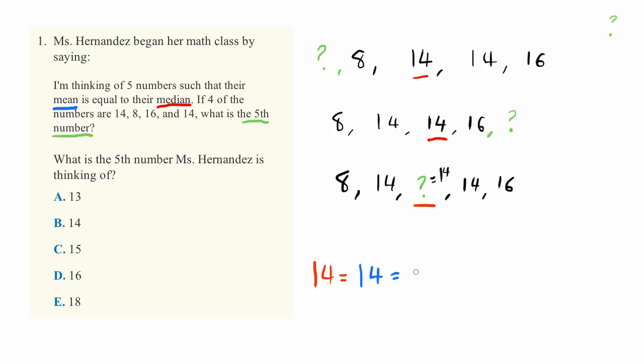And we remember how to calculate the mean. We simply add up all the numbers we have. So 8 plus 14 plus 14 plus 16 plus our unknown number, and then divide that by the total number of numbers that we have, which was 5. So there's 1, 2, 3, 4, 5 values.